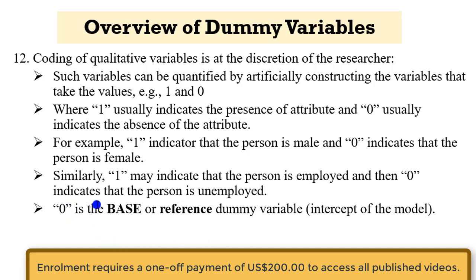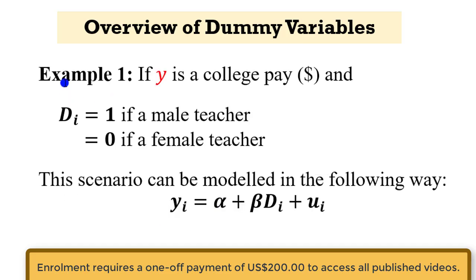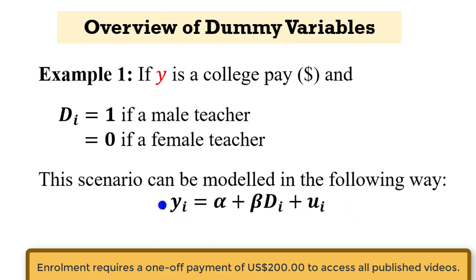Always remember that whichever variable is coded 0 is the base or reference dummy. Now let's take some examples. In this case, y is college pay and there is a dummy variable: 1 if we have a male teacher and 0 if we have a female teacher. Some studies have captured that male teachers earn higher pay than female teachers. So we have modeled it in this form, where college pay is a function of gender.